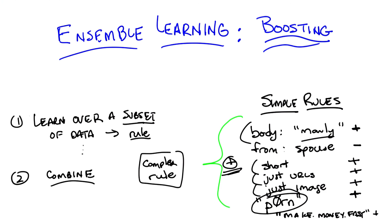So here we go. This is ensemble learning. You learn over a subset of the data over and over again, picking up new rules, and then you combine them and you're done.